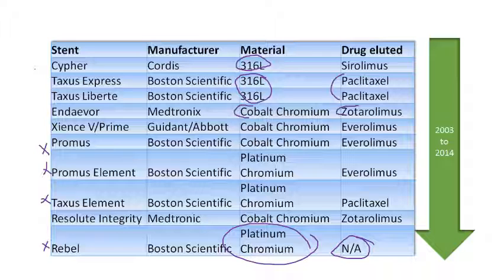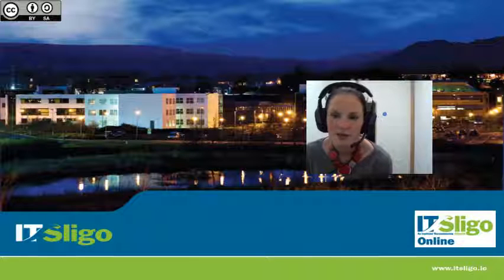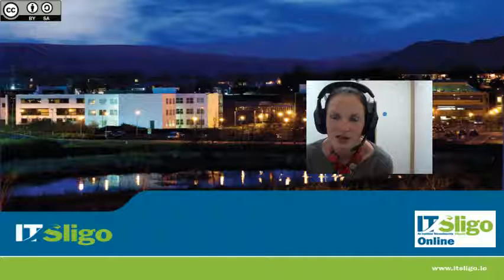In terms of the differences between the drugs: Sirolimus, Zotarolimus, and Everolimus are all immunosuppressing drugs — they suppress the immune system, telling it not to see the stent as a foreign body and not to produce scar tissue, thereby reducing re-stenosis. Paclitaxel is a chemotherapy drug whose job is to kill cells, targeting scar formation in that manner. That completes the section on stents, and next we're going to talk about the different materials used in the fabrication of these devices.